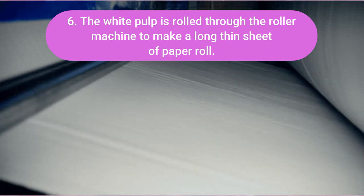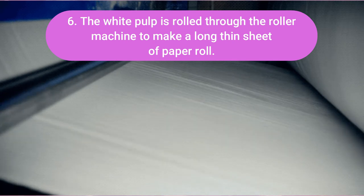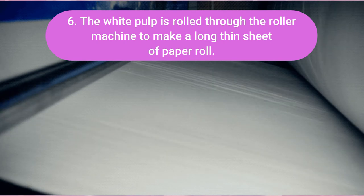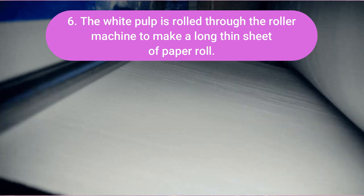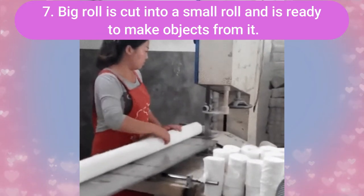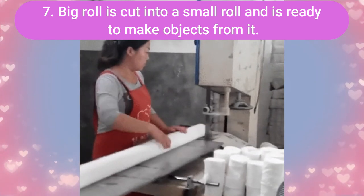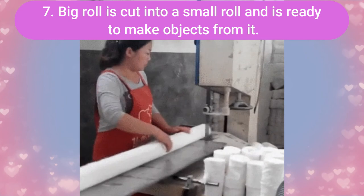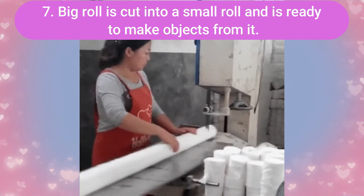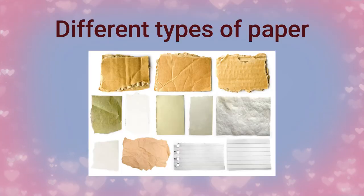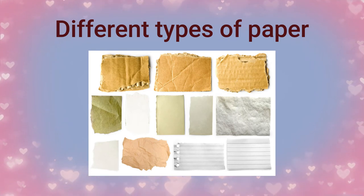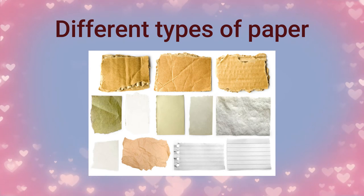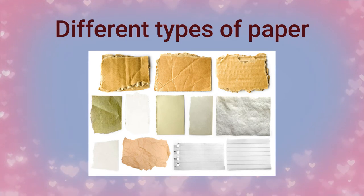Next, the white pulp is rolled through a roller machine to make a long sheet of paper rolls. From this big roll, it is cut into smaller rolls and is ready to be used for making objects. Paper can be of different colors, different textures, and its thickness also varies.